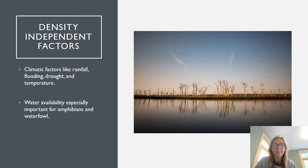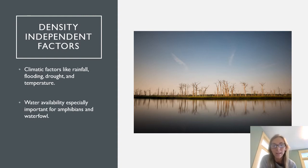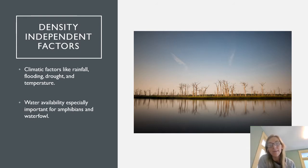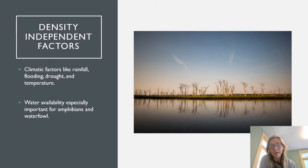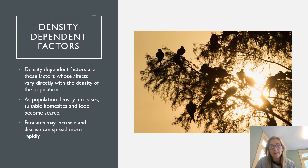Climatic factors like rainfall, flooding, drought, and temperature often play a role in limiting population growth. Something like a fire or volcano can drastically influence population size without regard for density. A hard freeze can kill tree buds, and rainfall — or the lack thereof — can drastically affect the breeding capability of groups such as amphibians and waterfowl. These are all examples of density-independent factors.